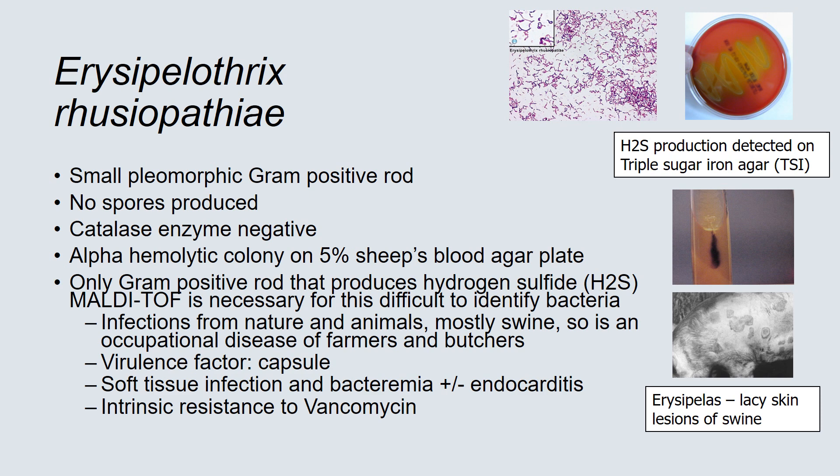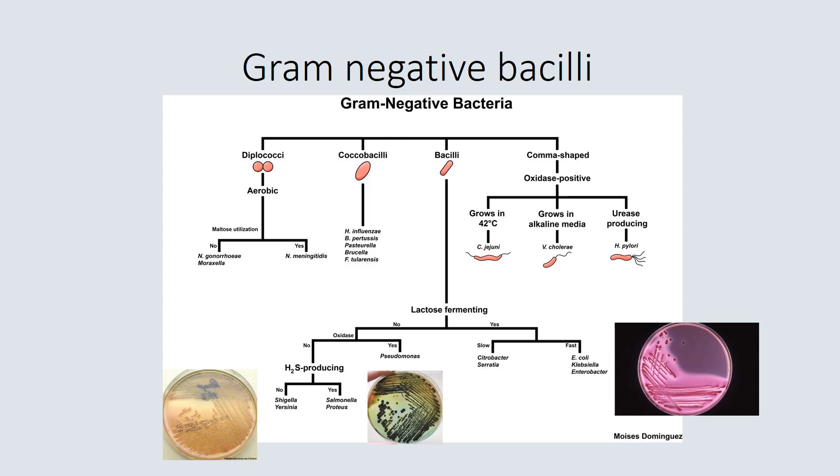MALDI-TOF is considered necessary for identification of this difficult-to-identify bacteria. Human infections are from nature and from animals, mostly swine, and it is considered an occupational disease of farmers and butchers. The disease in swine is known as erysipelas and causes lacy, thick skin infection on the pig. Virulence factors include a capsule, soft tissue infection, bacteremia with endocarditis, and it is intrinsically resistant to vancomycin.